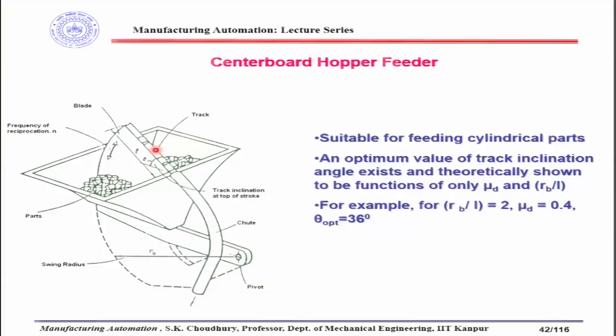Welcome back to the manufacturing automation course. Last time we started discussing the centerboard hopper feeder. This is one of the feeders for feeding small engineering parts to the assembly machine. In the hopper we have the mass of parts, and this kind of hopper is suitable for feeding cylindrical parts.